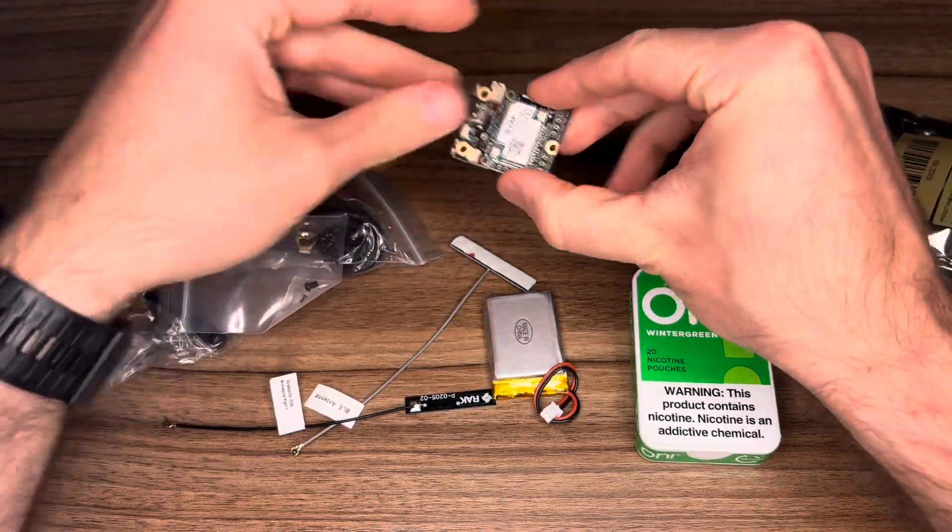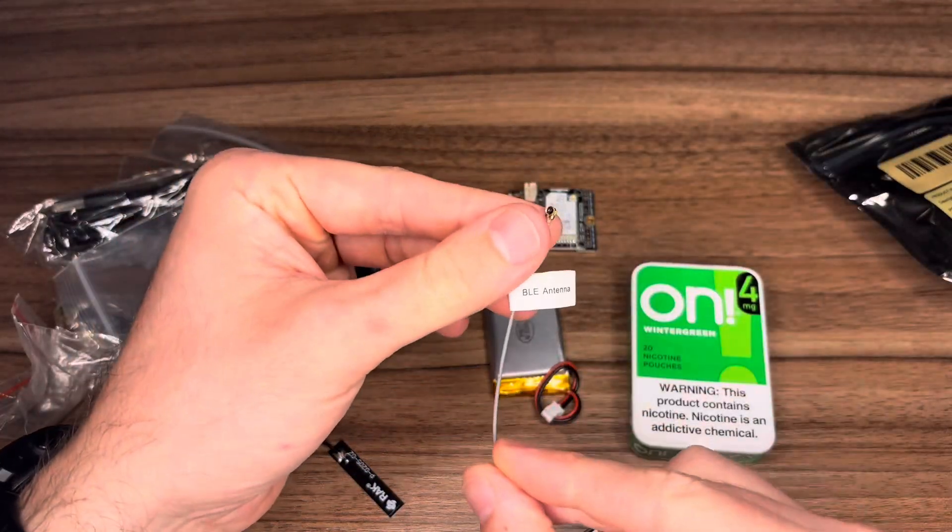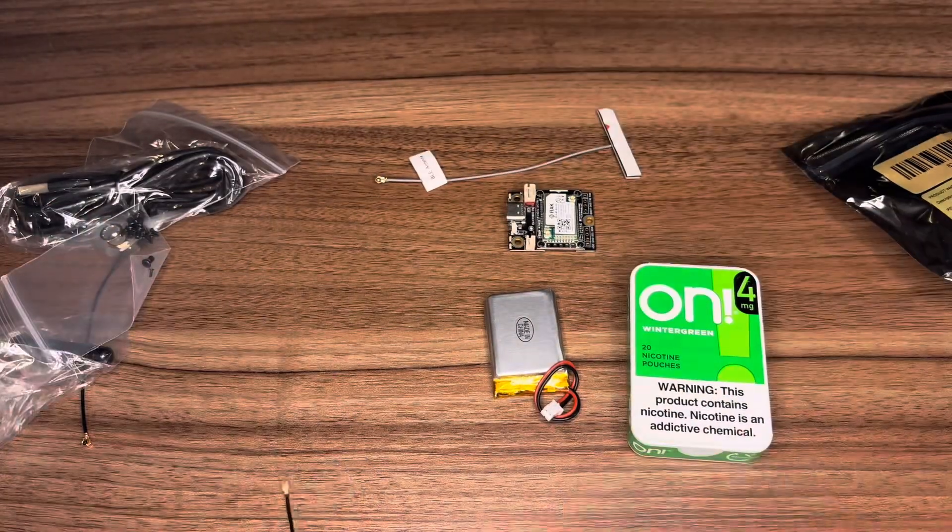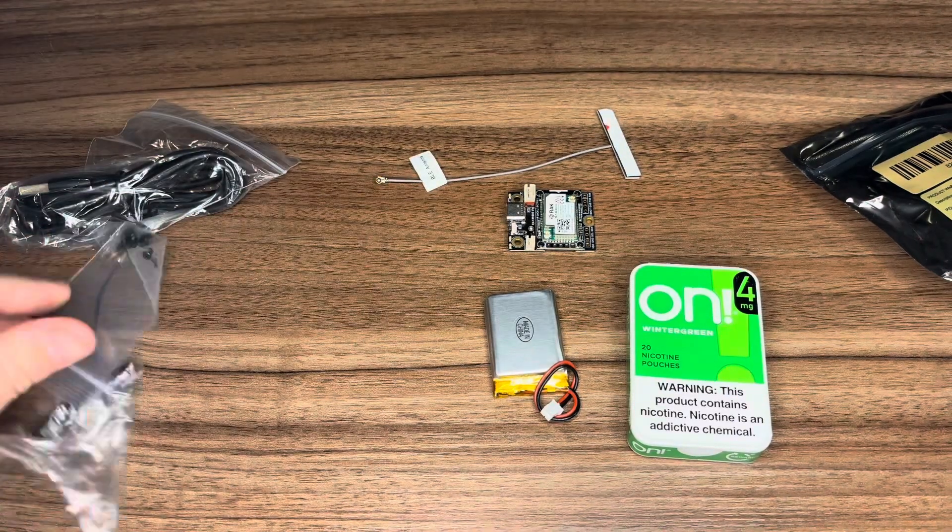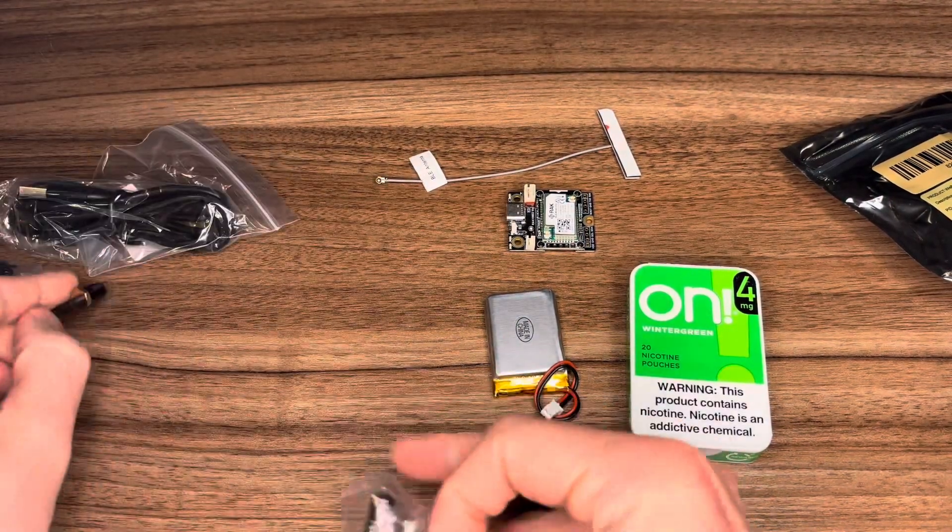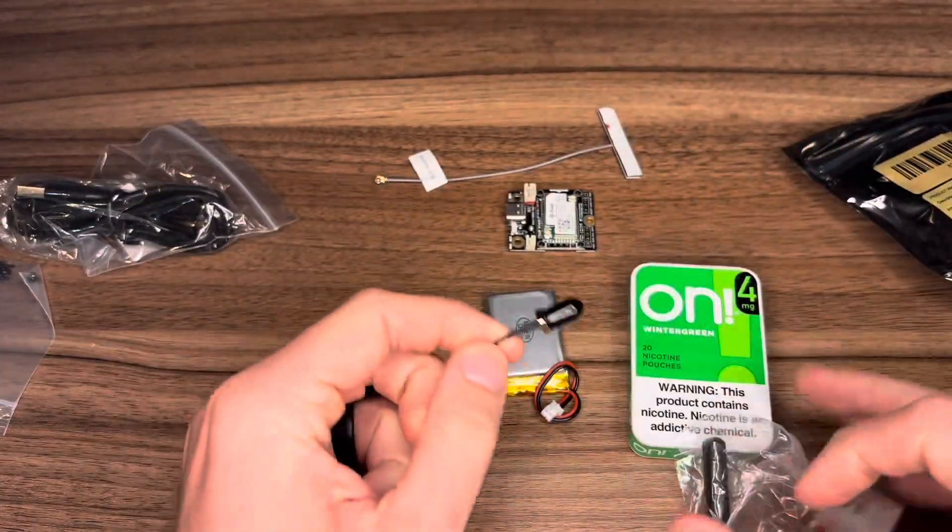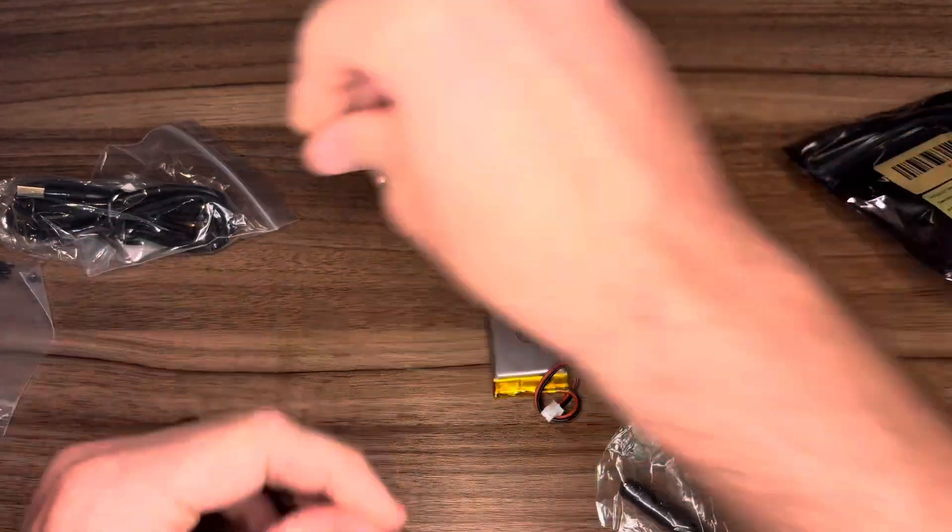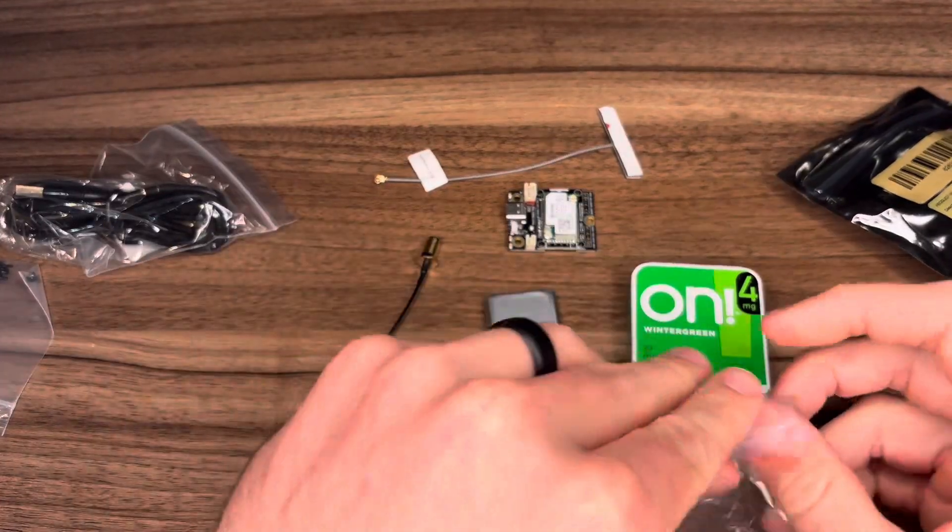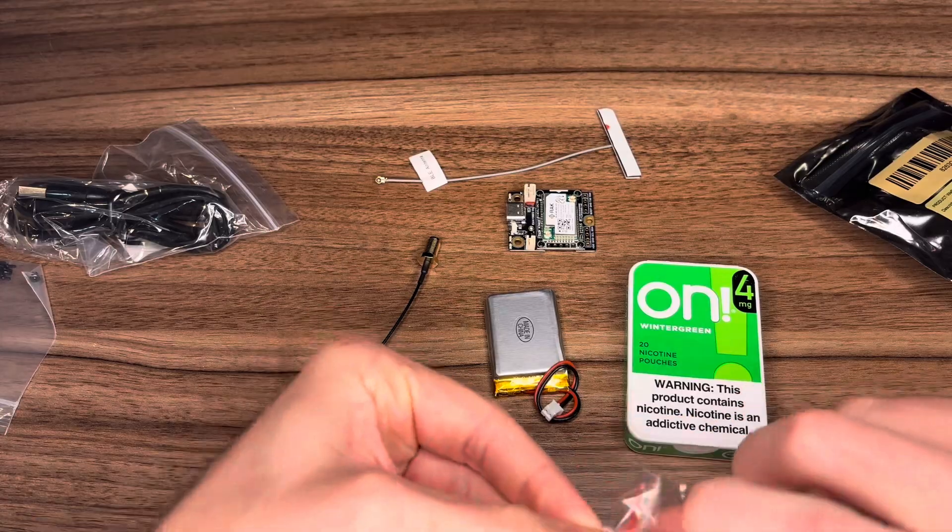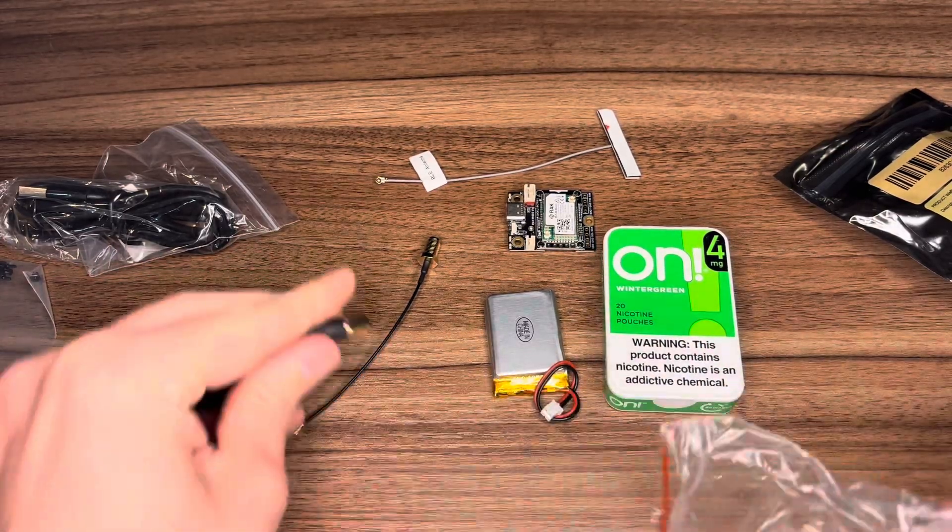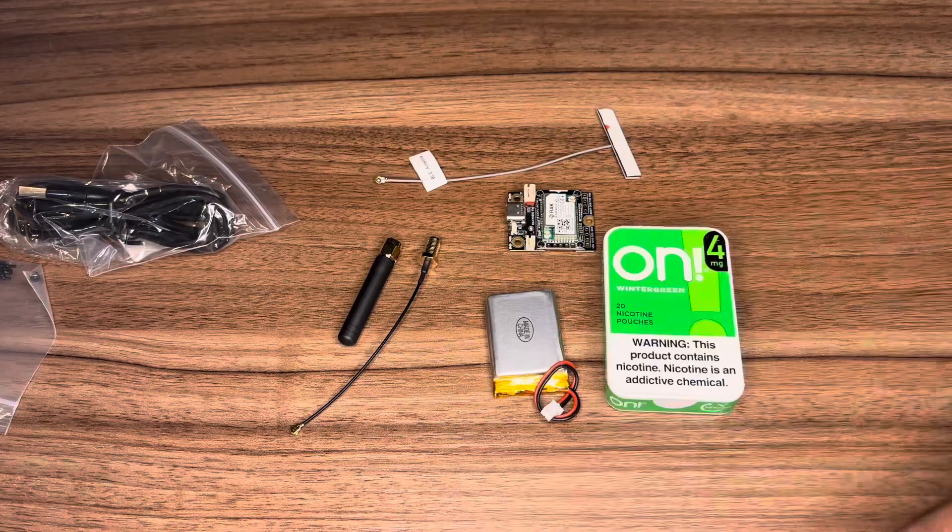We opted to buy the 19003 meshtastic starter kit on the RAK website. The only things you're going to need out of that bag are your bluetooth antenna, the chipset, the small SMA antenna, and the antenna adapter. Once you have all your materials laid out and you're ready to go, we can start building.